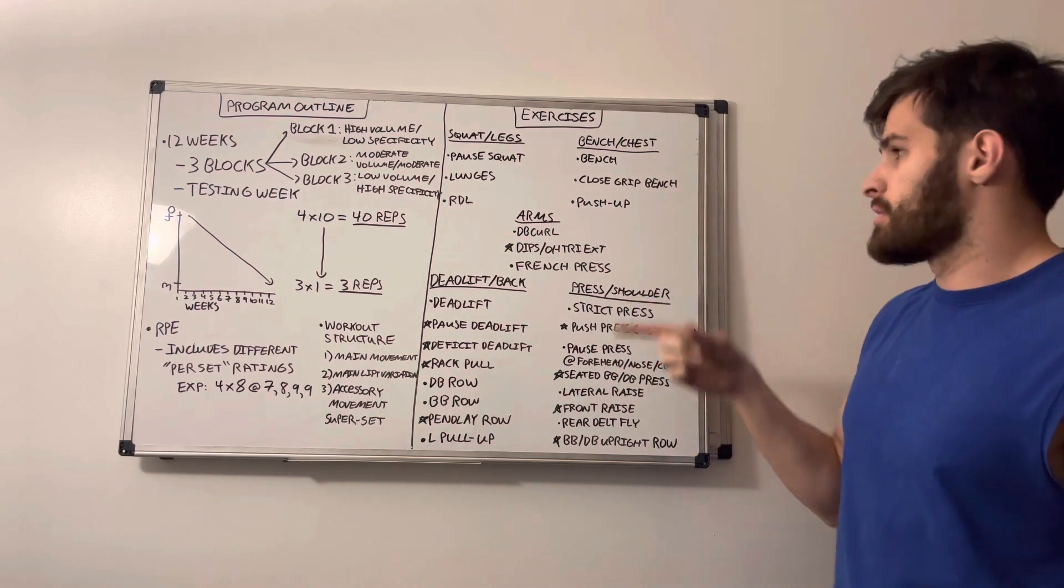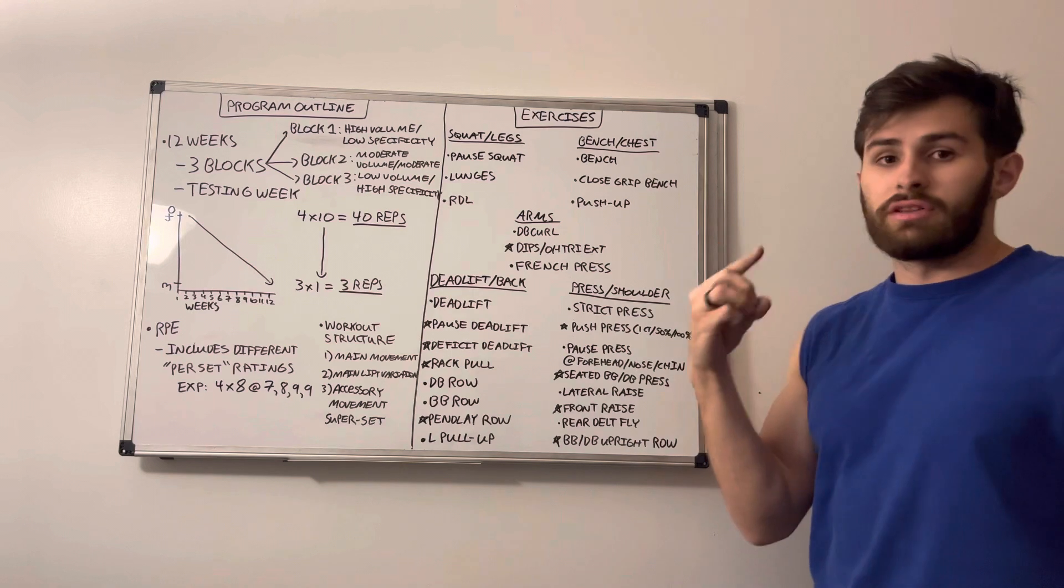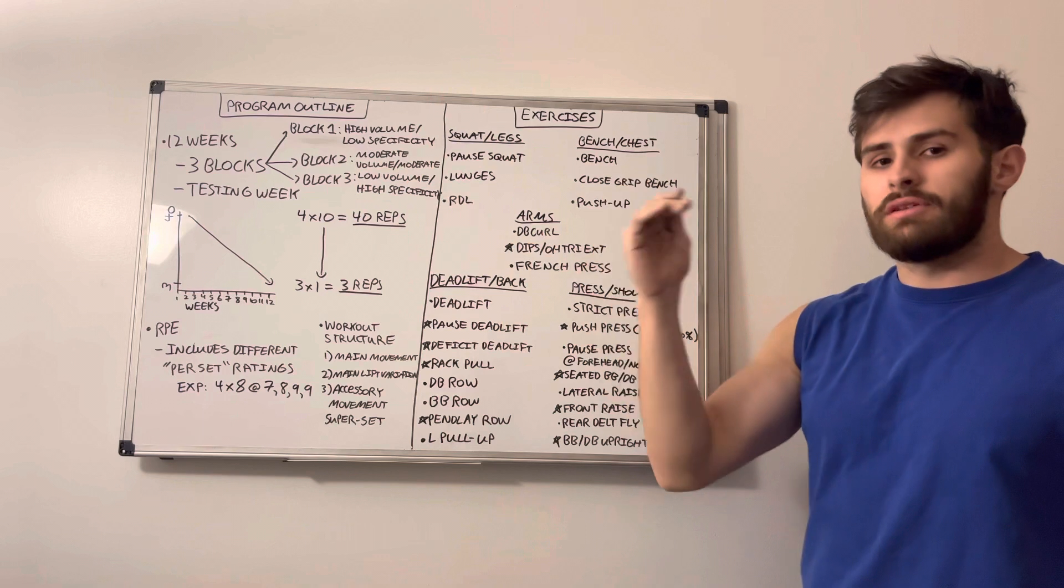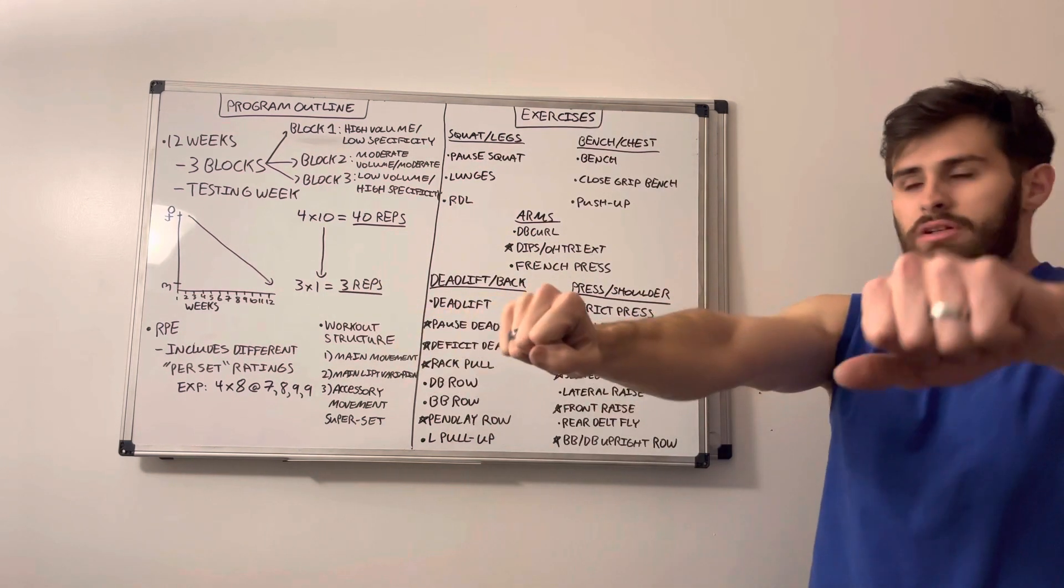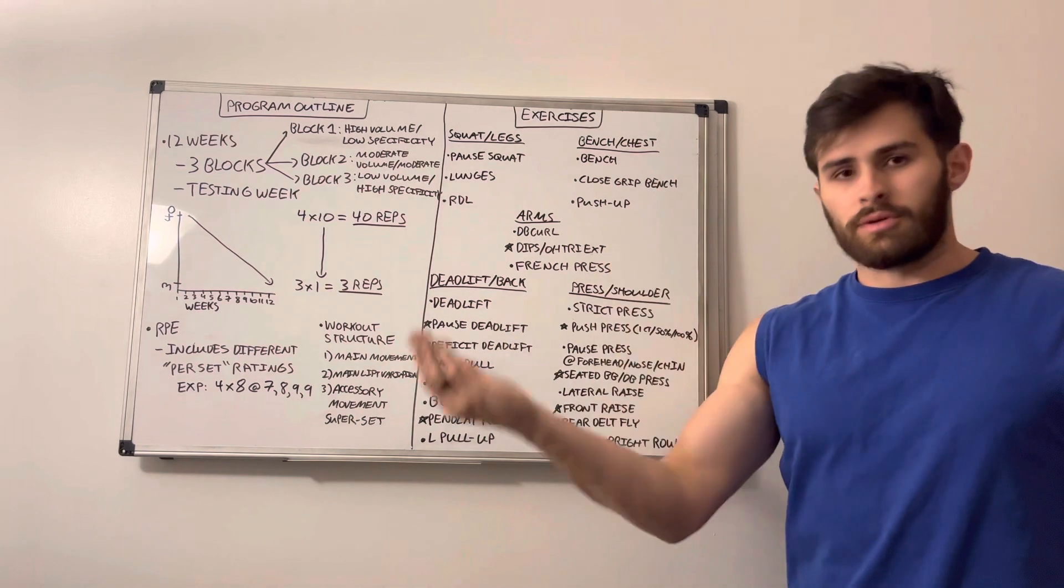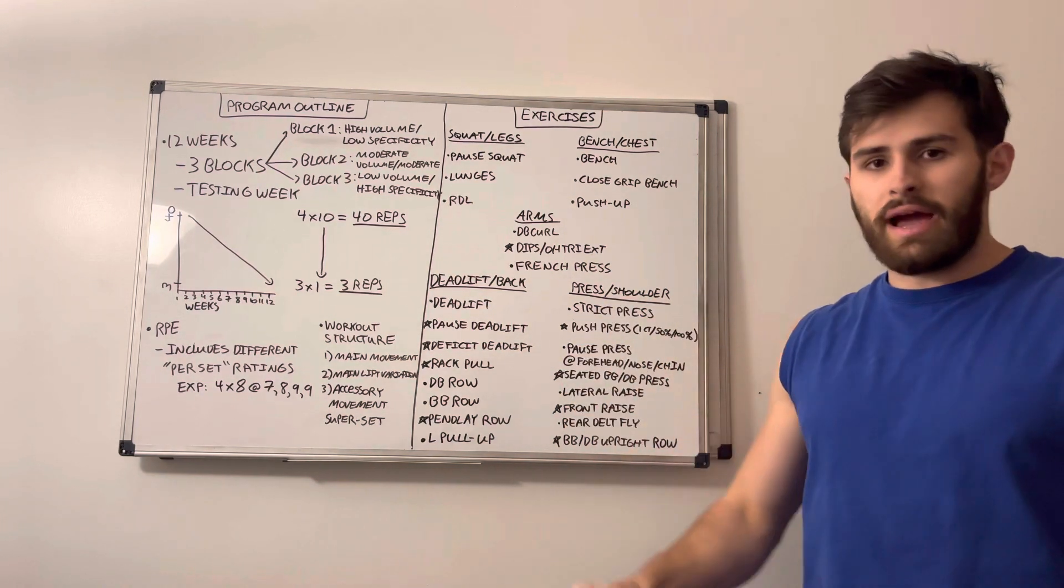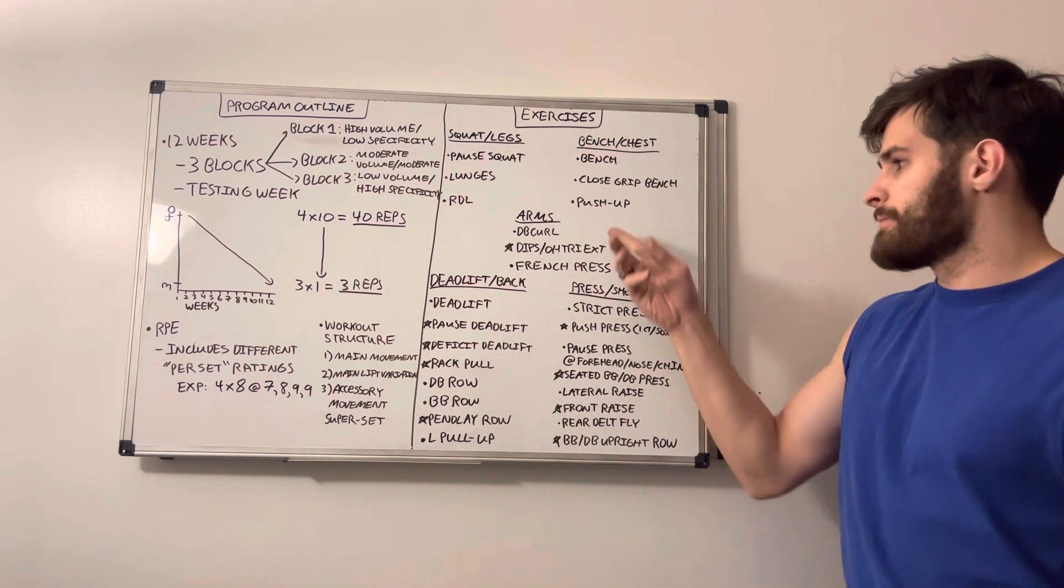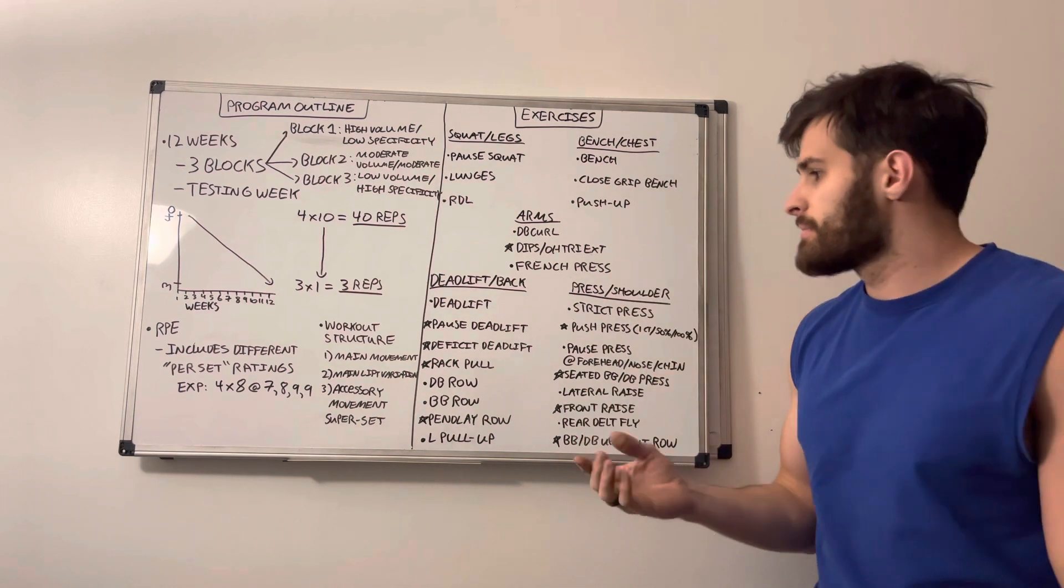Then we have bench and chest focus. So obviously we have the regular bench press. We have a close grip bench, which for those of you who worked through the last program towards about week eight or nine, then you've seen the close grip bench press. But it's just about as simple as it sounds. It's just a bench press with a closer grip. And then we have push-ups. And as you know, you can either do them out of the rack against the barbell, you can do them on the floor or with kettlebells. We'll have a push-up variation for developing our bench or our chest muscles.